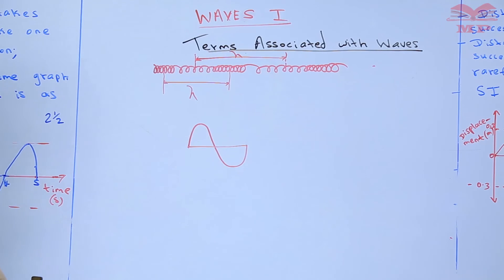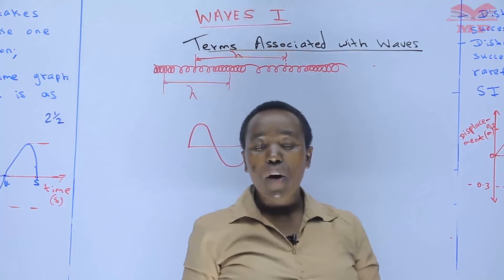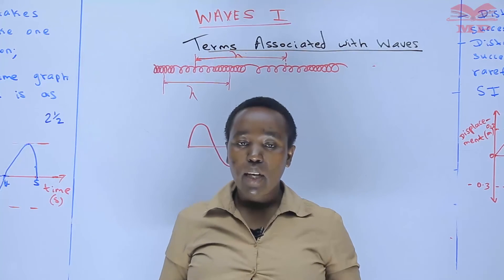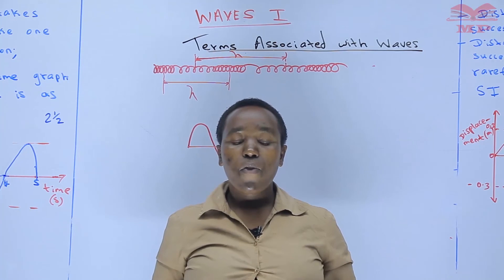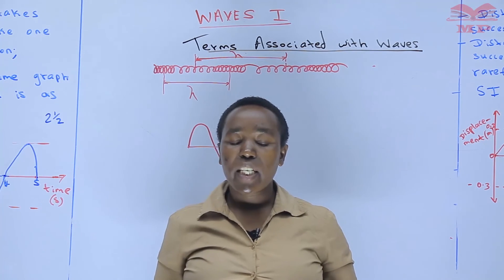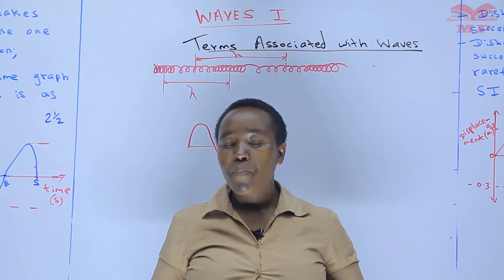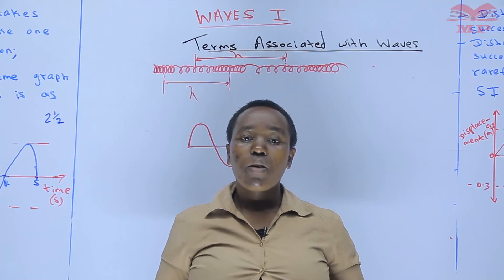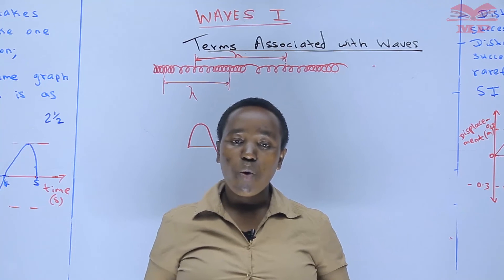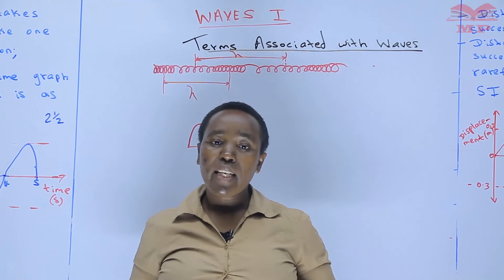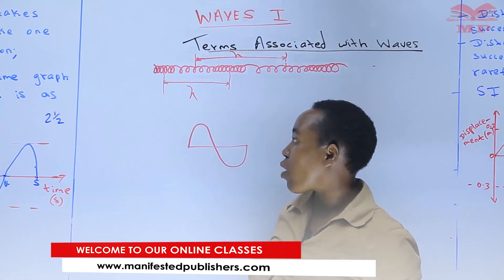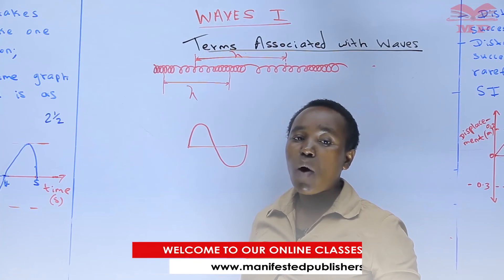So that is wavelength, and we have now been able to define all the terms. We are going to use them in numerical calculations — very key. Again, in Form Three waves, you will also be using these terms. So we have looked at four terms: amplitude — the maximum displacement from the mean position; frequency — the number of complete oscillations in one second; periodic time — the time taken to complete one oscillation; and finally wavelength. You can give any of its definitions — simply say it is the distance covered in one complete oscillation.